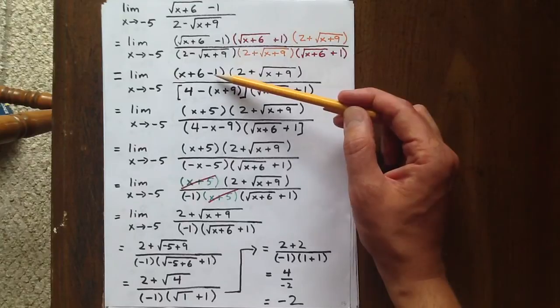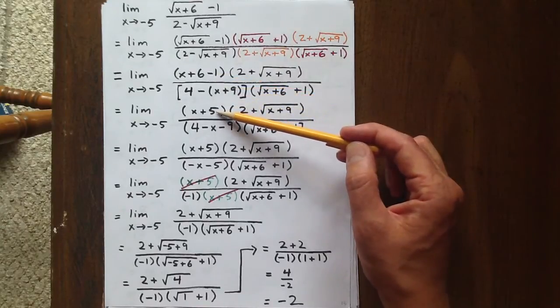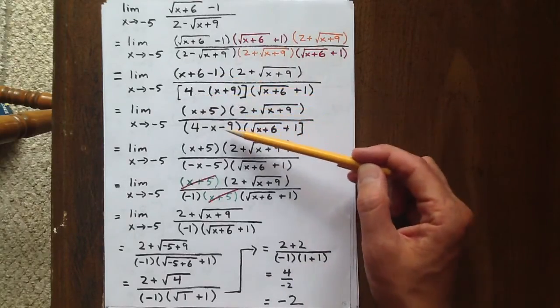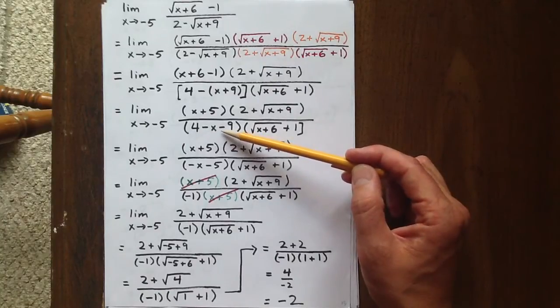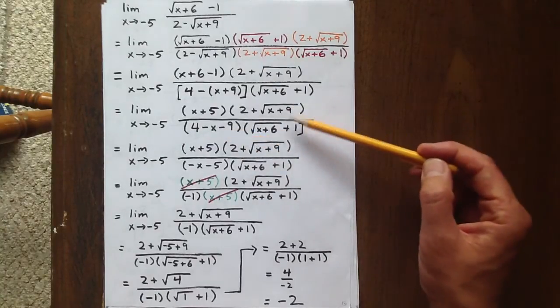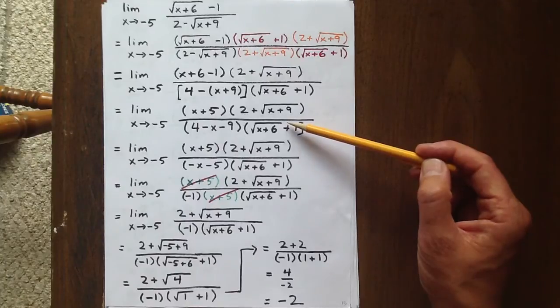Well, we can simplify x plus 6 minus 1 to be x plus 5, and we can simplify 4 minus quantity x plus 9 to be 4 minus x minus 9, and we keep our other factors, of course.